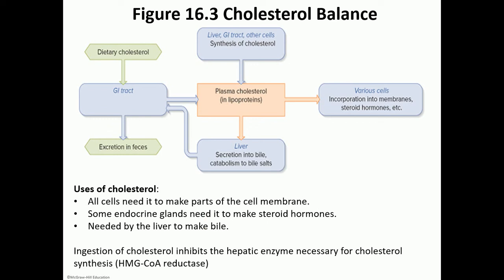There are two ways we get cholesterol: either the liver makes it, or it comes from diet. The liver can synthesize its own cholesterol using the enzyme HMG-CoA reductase. An increase in dietary cholesterol intake is going to inhibit that HMG-CoA reductase enzyme and stop the liver from making its own cholesterol, since you're already eating it.